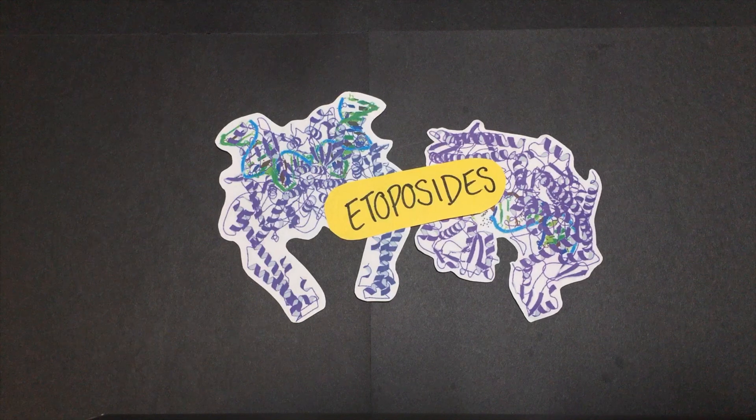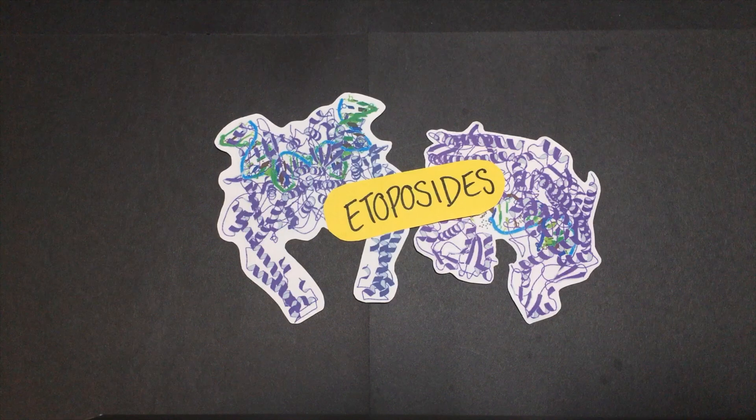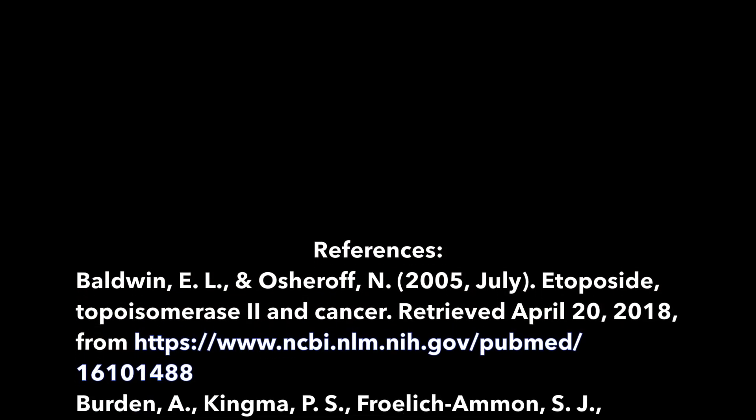Obviously, trading one cancer for another is less than ideal, so some Top 2a-related research aims to find regions of the DNA gate that aren't conserved between Top 2a and Top 2b. Well, that's about it for Top 2a today, so thanks for listening.